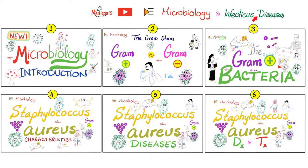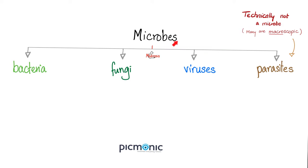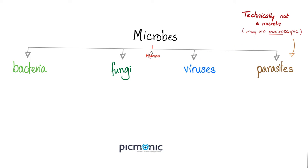Please watch the videos in this playlist in order. What does microbiology mean? Biology means the study of life — bio is life, micro is small — so it literally means the study of small life. What microbes do we have? We have bacteria, fungi, viruses, and parasites. Microbiology is divided into many branches: bacteriology, mycology (the study of fungi), virology, and parasitology.